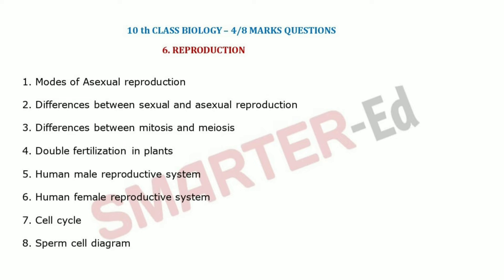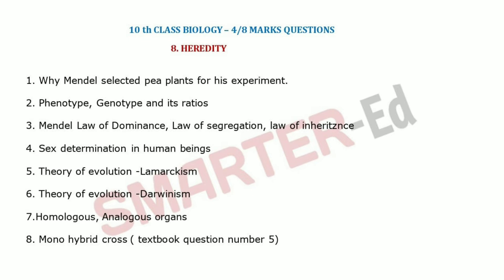Lesson number six covers modes of asexual reproduction, differences between sexual and asexual reproduction, differences between mitosis and meiosis, double fertilization in plants, and male and female reproductive system diagrams. The seventh topic is the cell cycle, and the eighth — a most important question — is the sperm cell diagram.